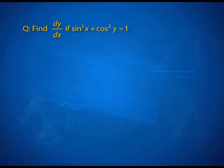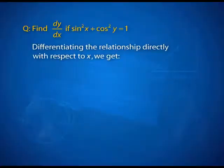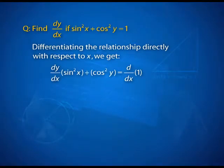How do I find dy by dx if I have an implicit function? In this case the relation is sin square x plus cos square y is equal to 1. The task is the same — I have to find the instantaneous rate of change of y with respect to x, but I cannot express y in terms of x directly. The method is to differentiate the relation with respect to x. We get the derivative of sin square x plus the derivative of cos square y equal to the derivative of 1 — differentiating both sides of the given expression.